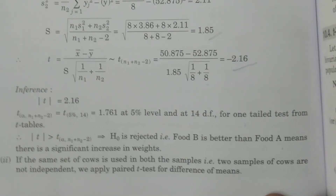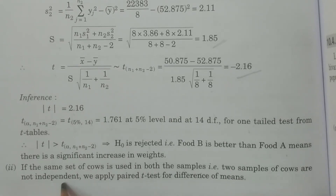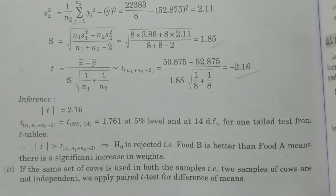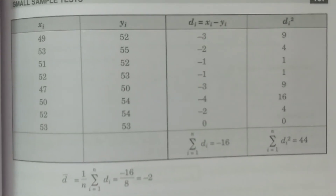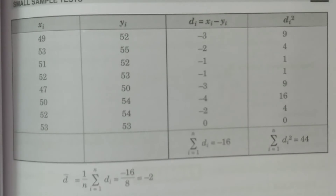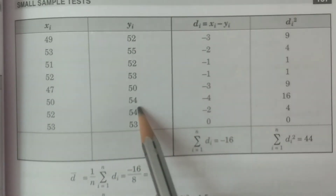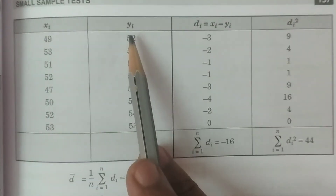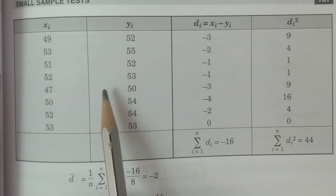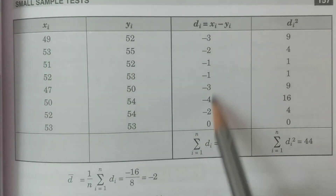Now the second problem: if the same set of eight cows is used for both samples, the two samples are not independent. We apply the paired t-test for difference of means. The null and alternative hypotheses remain the same. For the test statistic, consider xi and yi — the two dependent observations — and calculate di = xi − yi: 49−52, 53−55, etc.